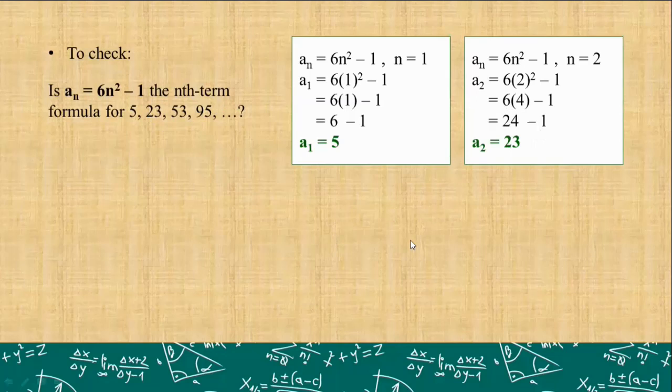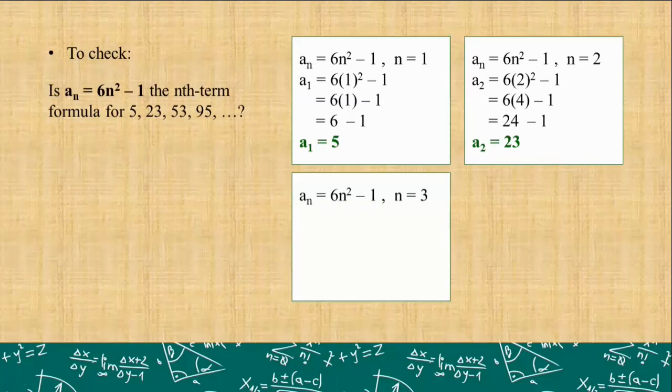So far, our formula is working. Let's go to the third term. This time, solve it again. Then we'll resume this video. Let's check if your answer is correct. Let's use n equals 3. 3 squared is 9. 9 times 6 is 54. Minus 1, we have 53. So it matches. 53 is indeed the third term.